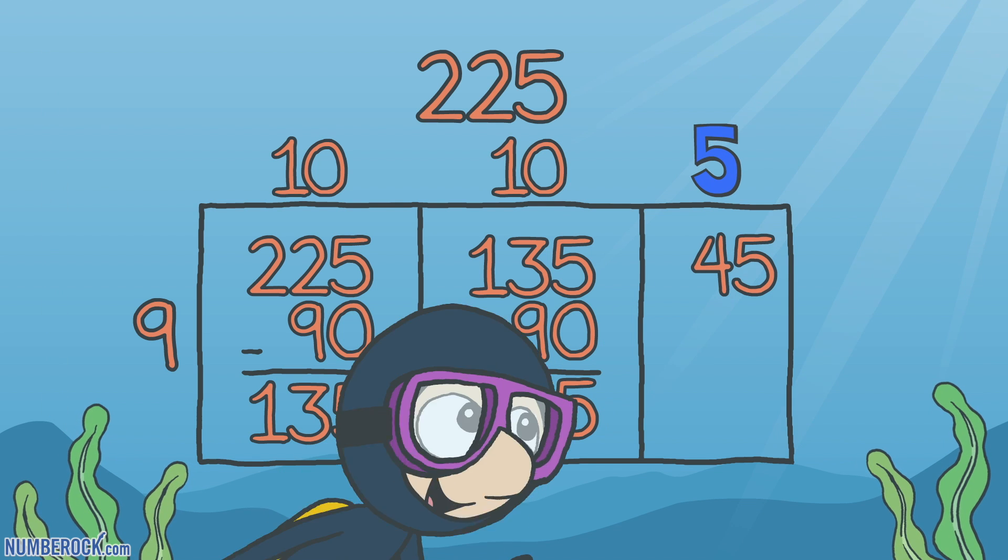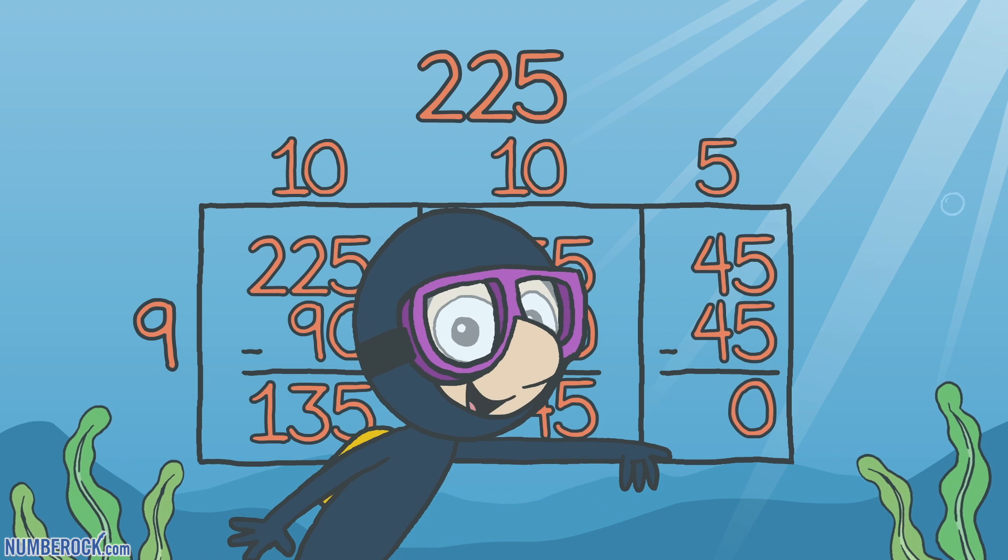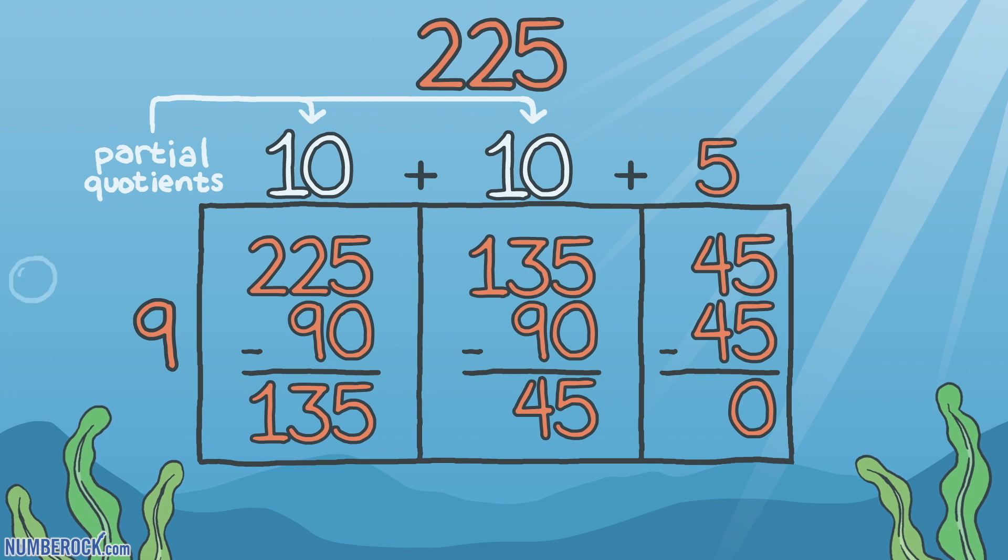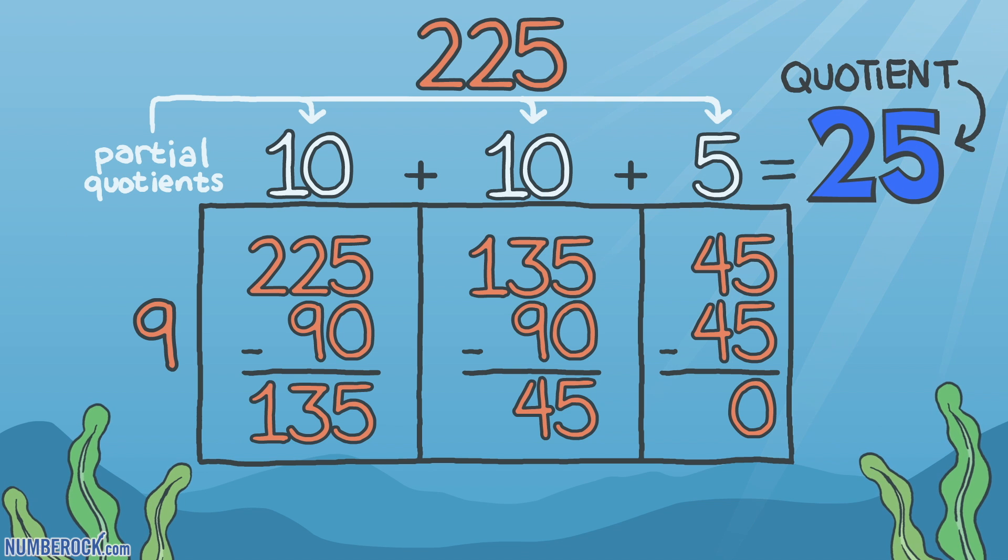So when we subtract we get a 0. The final step is where we are at: add 10 and 10 and the final 5, and the quotient we'll find is 25.